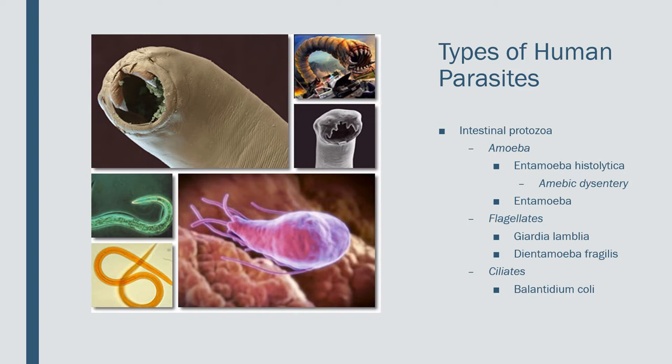Amoebas are also known as sarcodina, and they have two stages to their life. One is the trophozoite, when they're living, swimming around, and reproducing, and then there's the cyst, which is the dormant stage. They reproduce by binary fission, similar to bacteria.